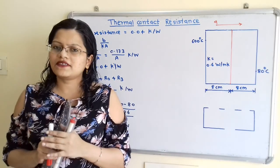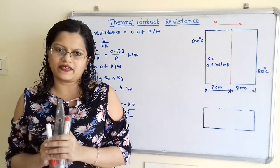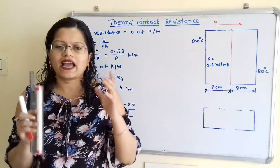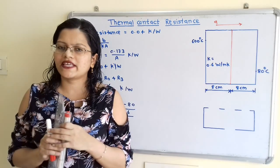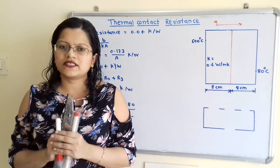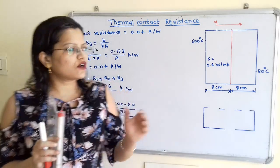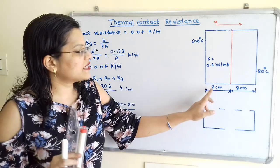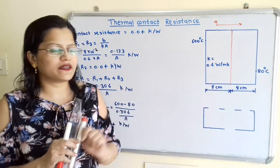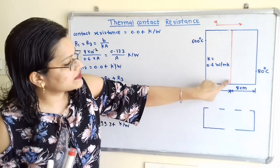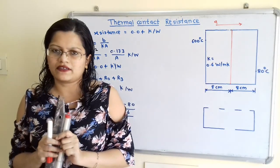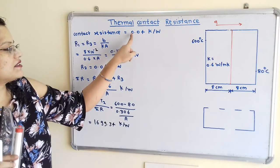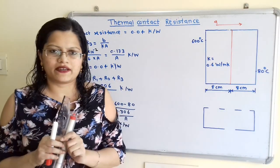Let us first understand the given data with the help of a diagram. It is given that there are two layers of wood each having 8 cm thickness, and contact resistance is also given. This is the first layer of wood and this is the second layer of wood, each having thickness of 8 cm. This is the contact surface, shown with the help of a red line.